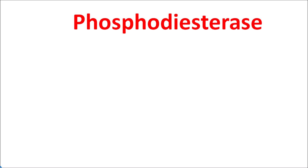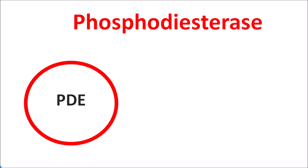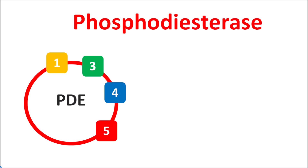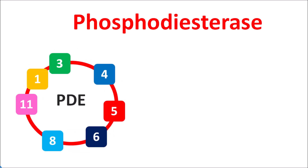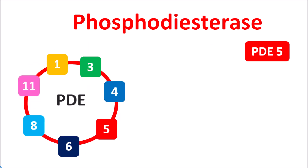Phosphodiesterase is a cleavage enzyme commonly known as PD. This PD is a group of enzymes classified into different categories like PD type 1, type 2, type 11, and so on. We have various types of PD enzymes which are responsible for different types of physiological actions.